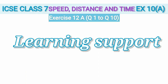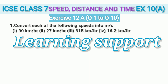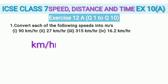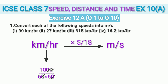The first question of Exercise 12A is: convert each of the following speeds into metres per second. We are given four sub-questions in which speed is given in kilometres per hour and we have to convert it into metres per second. This can be done easily if we multiply speed in km/h by 5/18 to get speed in m/s. To understand where 5/18 comes from: 1 kilometre is 1000 metres and 1 hour is 60 × 60 seconds. Cancelling two zeros gives 10/36, and cancelling further gives 5/18.